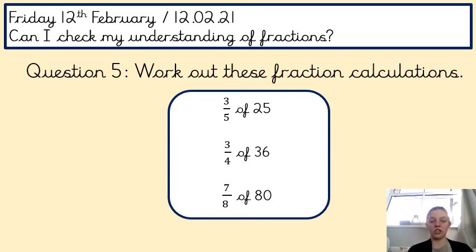Your final question, question five, before your challenge, is work out these fraction calculations. You've got three. You've got three-fifths of 25, three-quarters of 36, and seven-eighths of 80. Now, remember our two-step method. First we divide, then we multiply. So, it would be 25 divided by 5. That answer would be multiplied by 3. Then, when you've got your multiplication answer, that is what three-fifths of 25 is. Three-quarters of 36: 36 divided by 4, you multiply the answer. That would be what three-quarters of 36 is. And last but not least, you would do 80 divided by 8, and then you would times it by 7 to get your answer of 7-eighths.